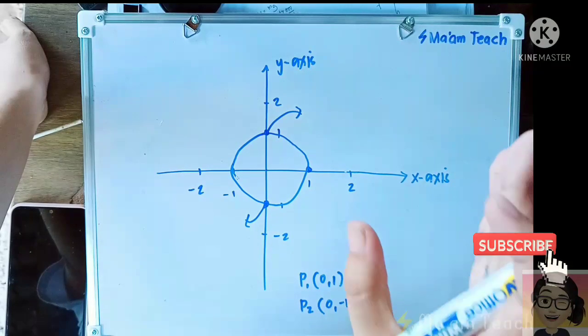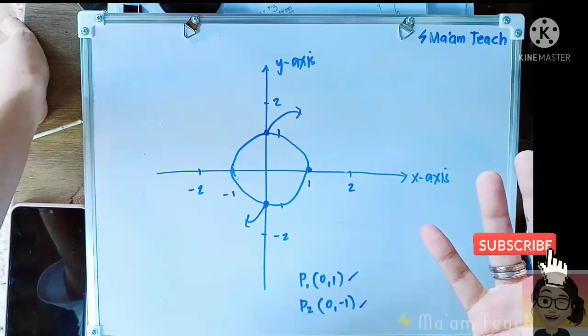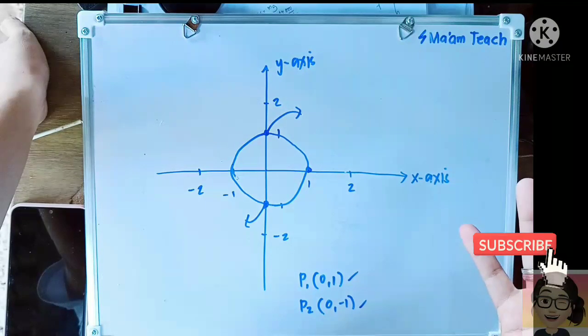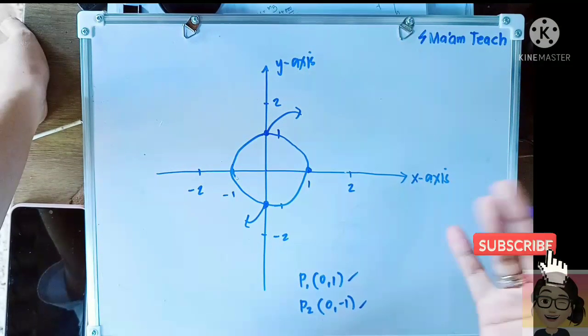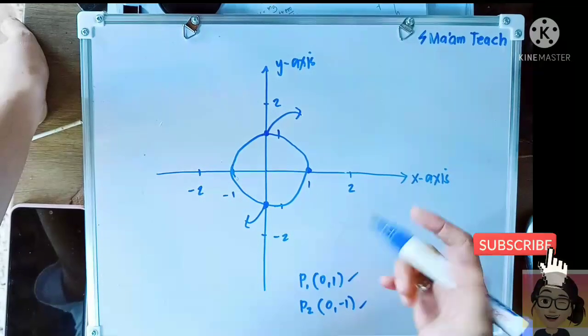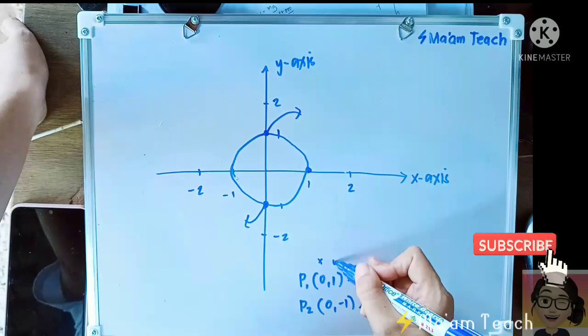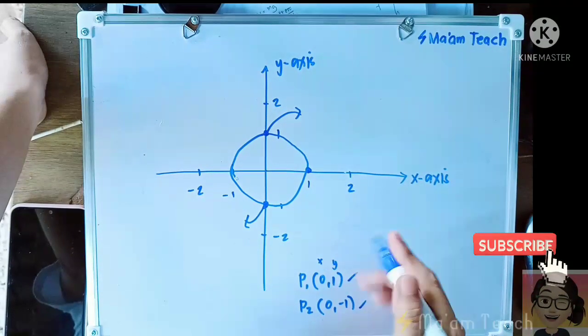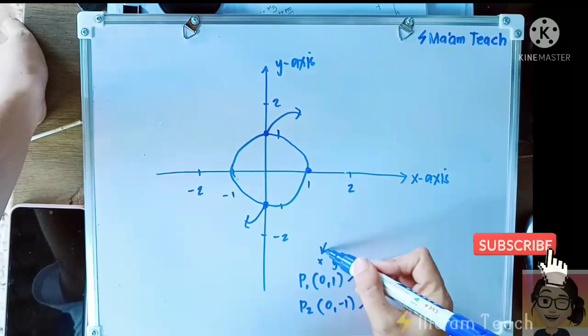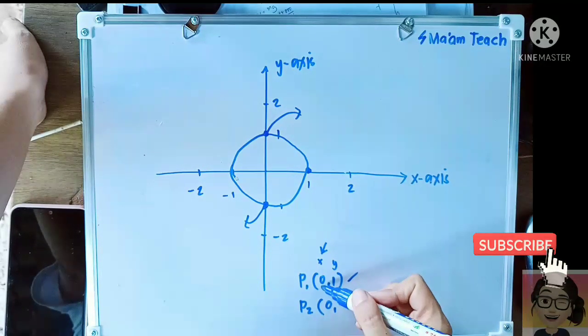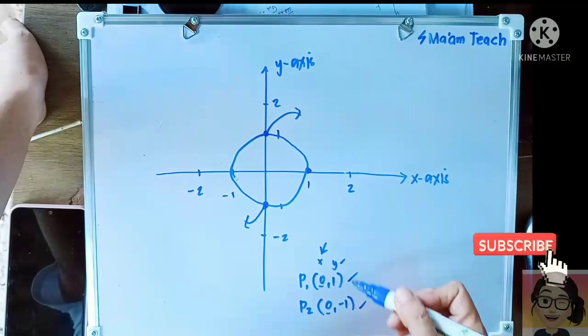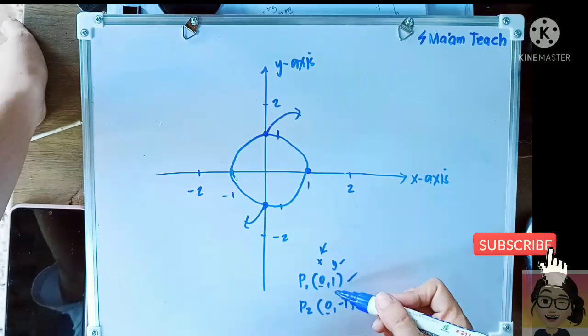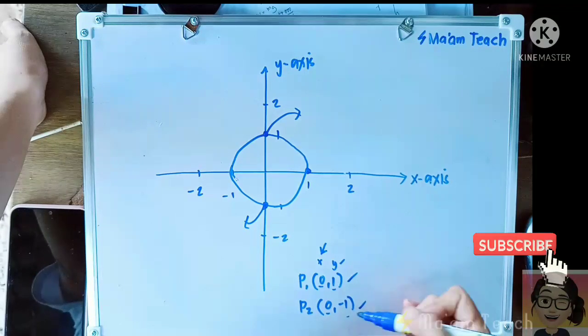One value of function. Now what can you observe here? This is x, this is y. As you can see, our value of x or input is 0 and 0, but the value of y appears to be positive 1 and negative 1.